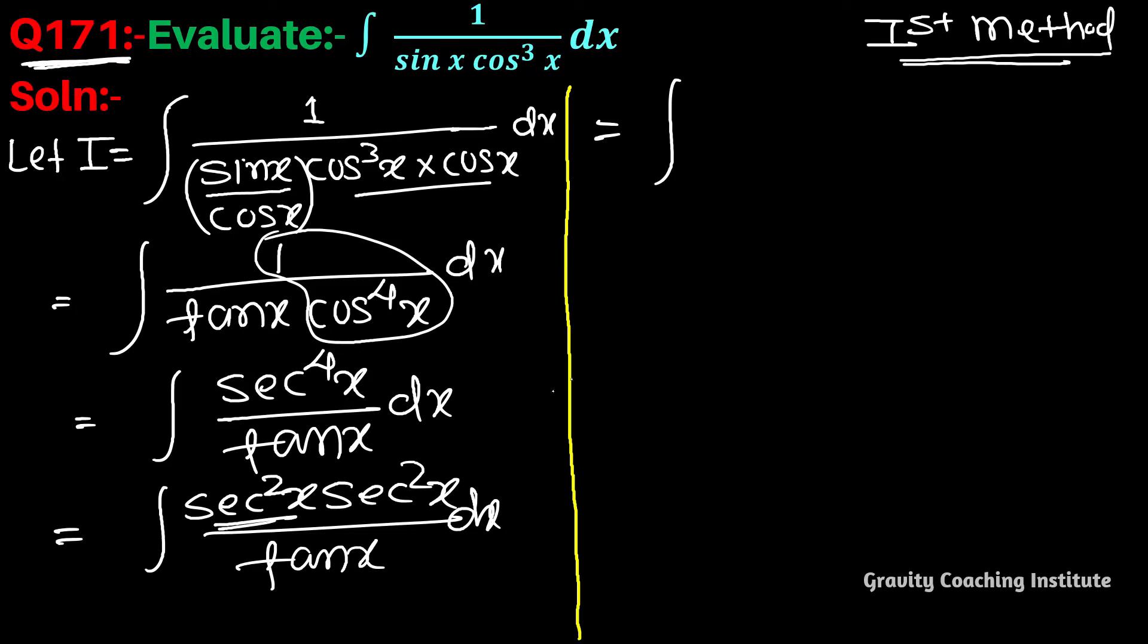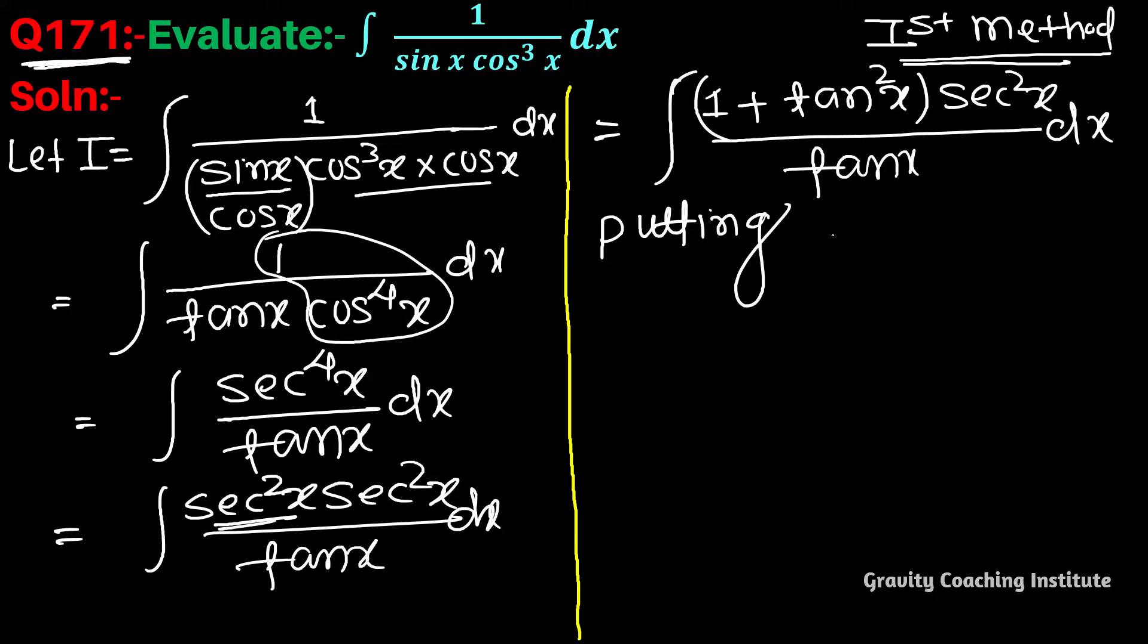Now 1 by cos square x formula is 1 plus tan square x. We will use substitution to change. We can differentiate sec square x. So putting tan x equal to t, now differentiate with respect to t.